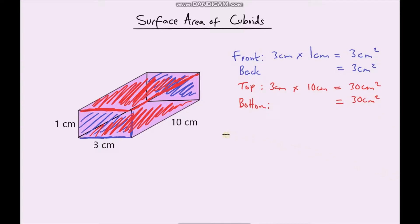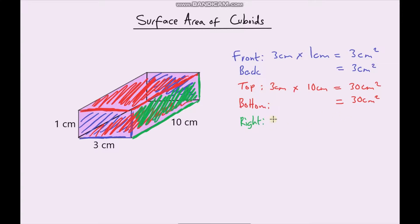Now we've just got to do the right and the left. So the right is going to be this area — 10cm by the height, which is 1cm. So the right is going to be 10cm multiplied by 1cm, and that gives us 10cm².